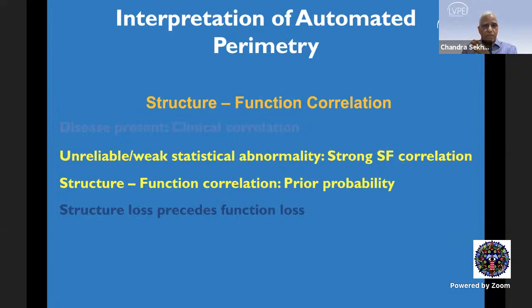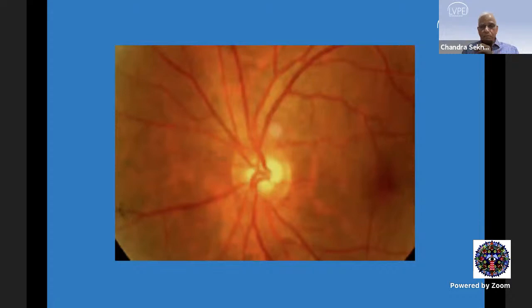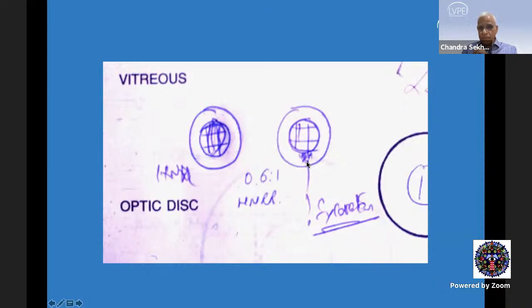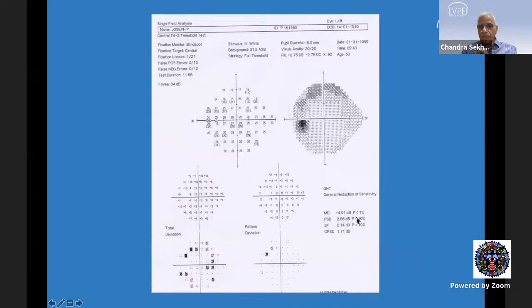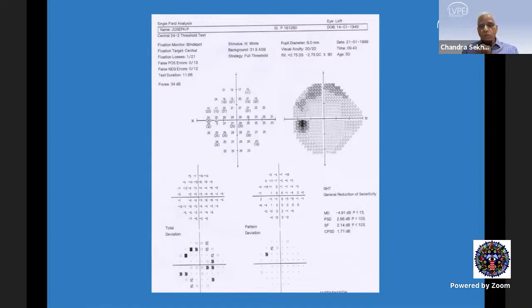Moving on to reinforce the concept: an unreliable or weak statistical abnormality with a strong structure-function correlation — if you have strong structure-function correlation, your prior probability of disease is higher, and even a weak statistical abnormality can indicate disease. Here is an example of an inferior excavation where the optometrist felt the disc was healthy. GHT is borderline, PSD is flagged only at 10%, but there is a cluster of three points in the superior arcuate area that are statistically abnormal — satisfying only one of Anderson's criteria. Because it correlates with the clinical abnormality, I would call this early glaucoma.